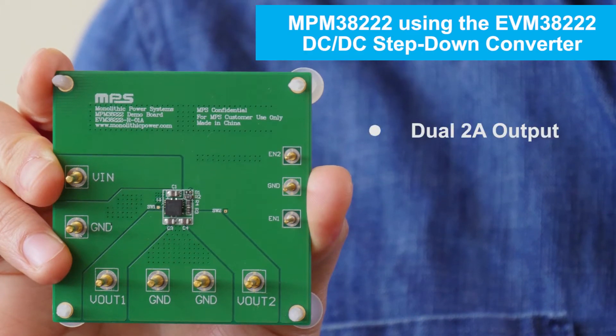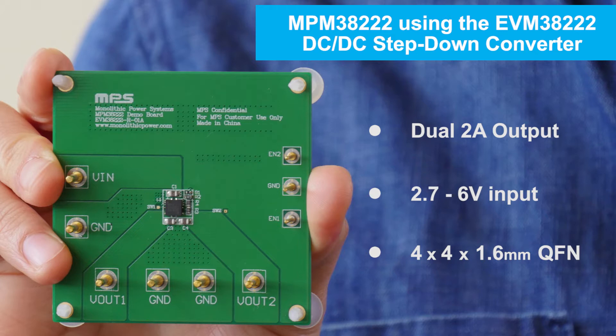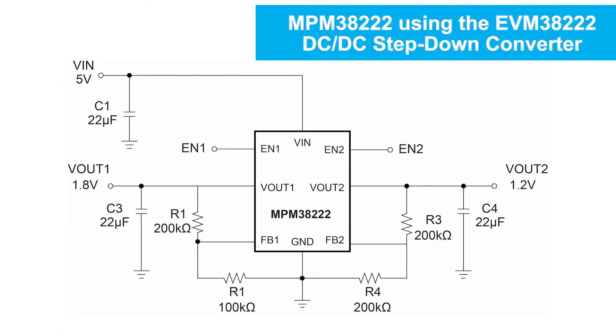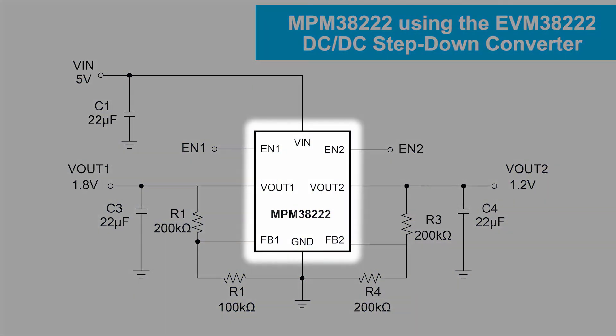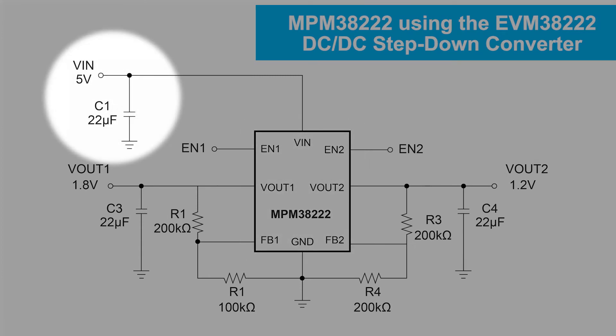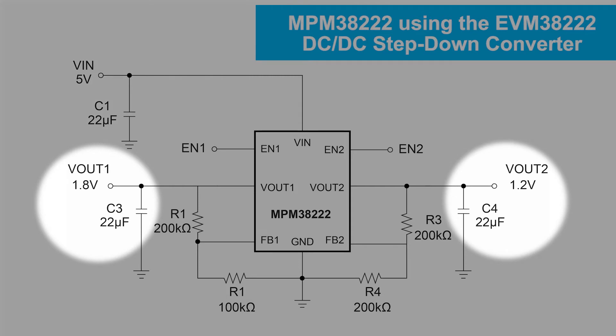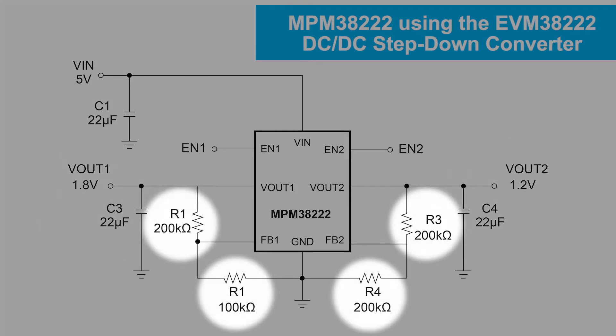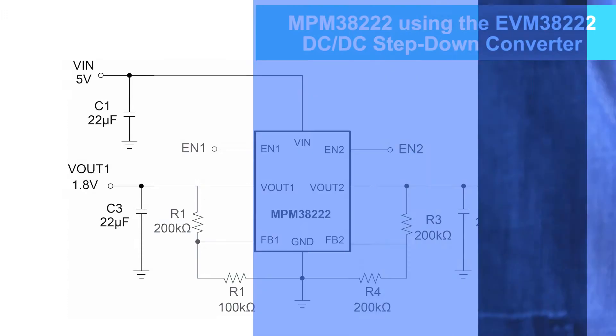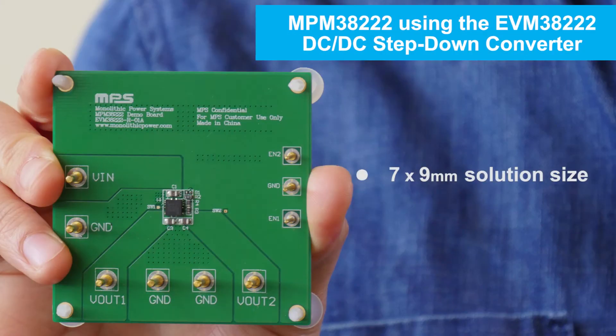The MPM38222 is a dual 2A output, 2.7 to 6V input step-down power module in a small 4x4x1.6mm QFN package. It has integrated inductor, requires only one 0603 input capacitor, two 0603 output capacitors, four feedback resistors, and comes in a very compact 7x9mm solution size.